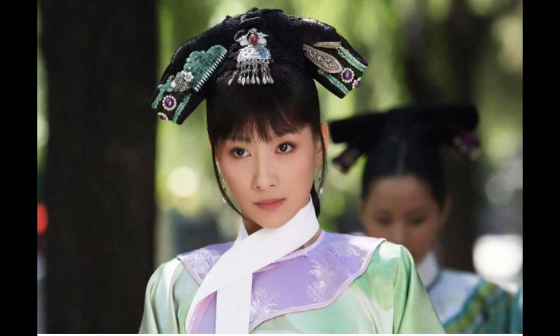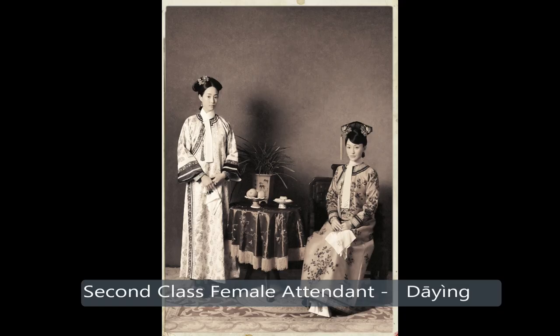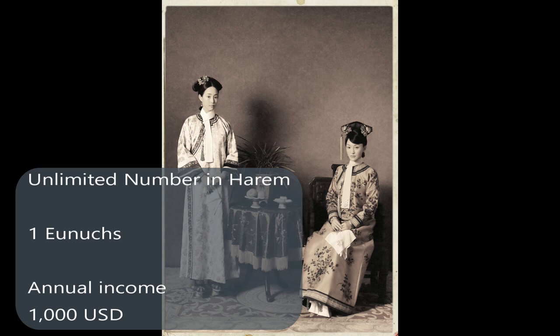The last and lowest rank is second-class female attendants, or in Chinese, Ta Ying. We can also have unlimited numbers in the harem, and only one unit is given to her. They are low-class concubines with no right to use a sedan unless given by the emperor, and they cannot use a phoenix hat pin or any accessory with phoenix.